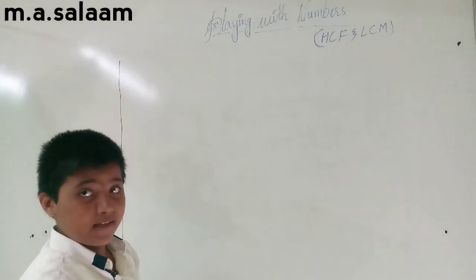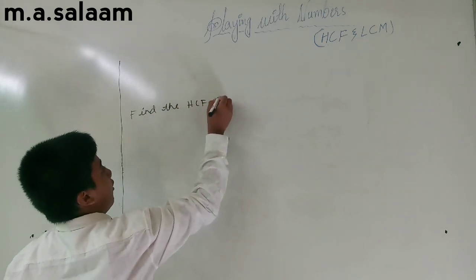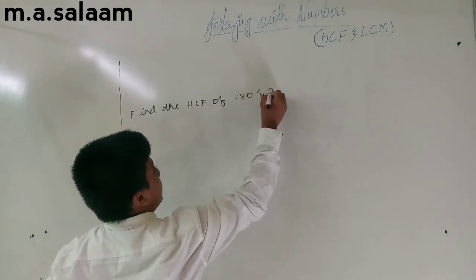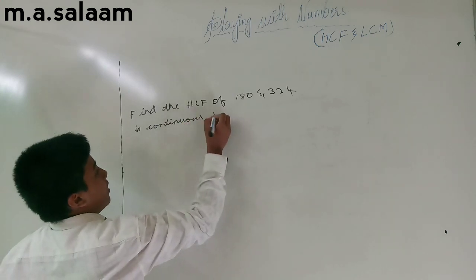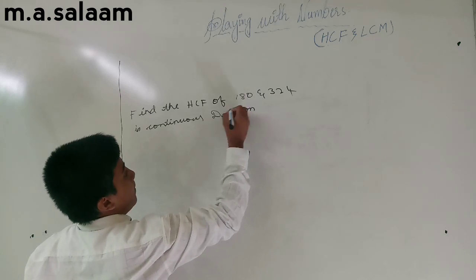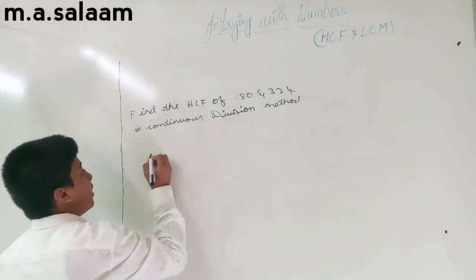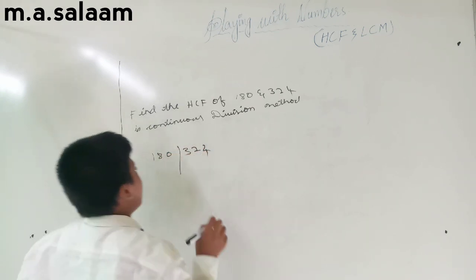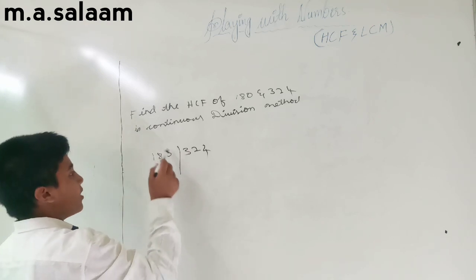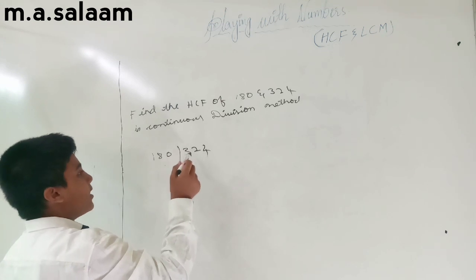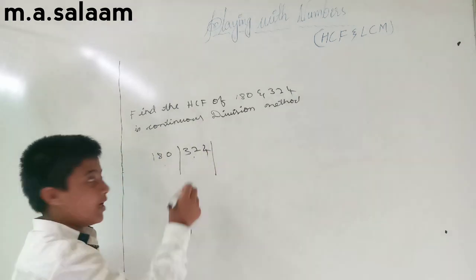If your question is: find the HCF of 180 and 324 using the continuous division method, then your answer should be set up like this: write 180, draw a line, write 324. The number which is smaller we use as the divisor, so here we use 180 as the divisor and 324 as the dividend.